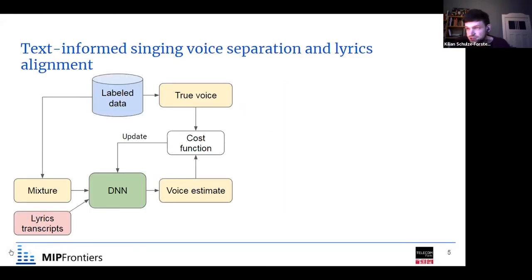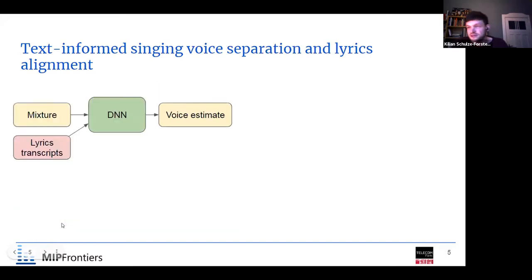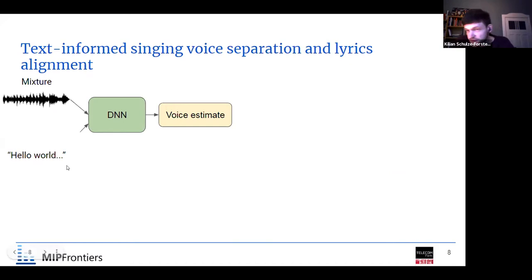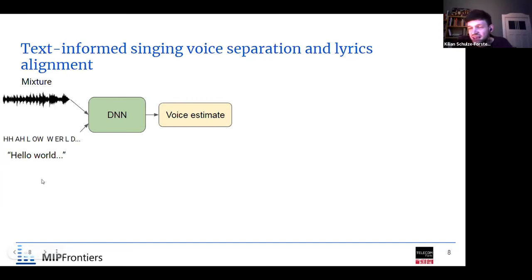For lyrics-informed source separation, we use exactly the supervised training pipeline I described, with the difference that we now have lyrics transcripts as additional input. The mixture is an audio signal, and the lyrics transcript is basically just a sequence of words. The first thing we do is translate these words into phonemes — the smallest sound units of a word. For example, 'hello' has the sounds h, e, l, o. Phonemes are a mid-level representation between written text and audio signal because they refer to the sound of the word.